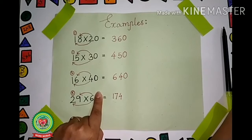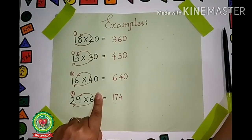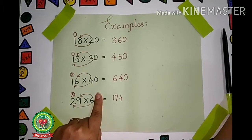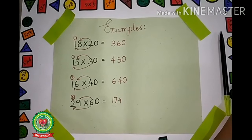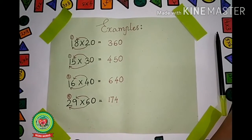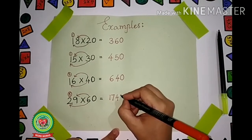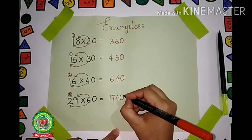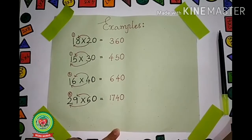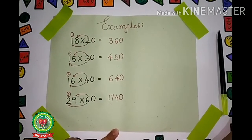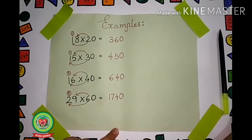Now what is the number? 174. Remember to remove your finger. What can you see? There is a 0. So we will write the 0. Our answer is 1740.